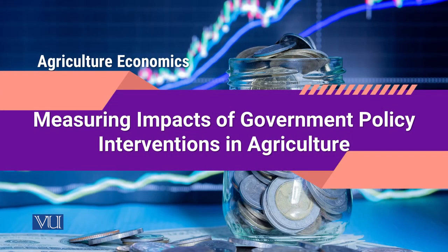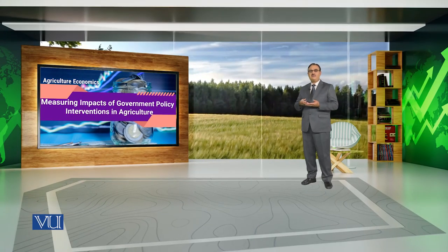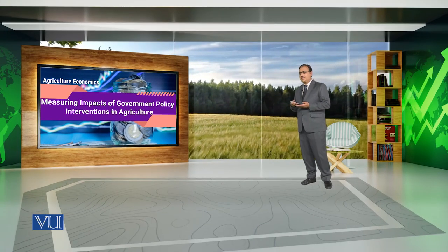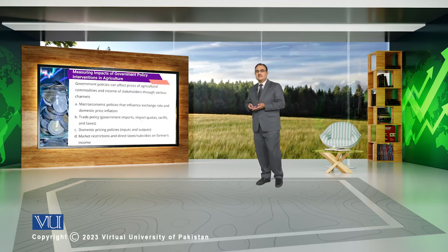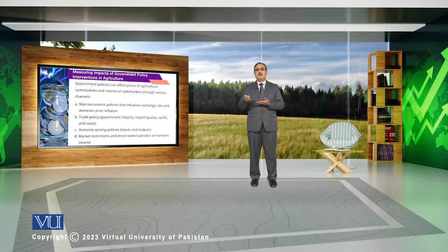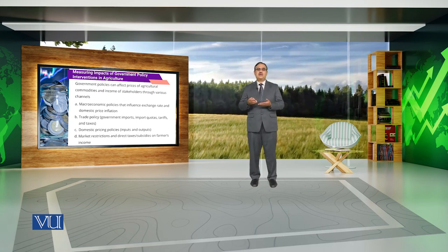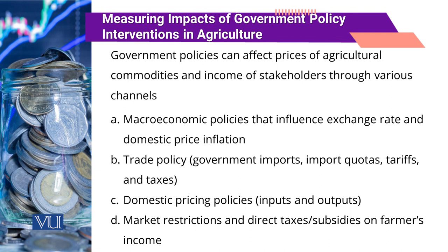Measuring impacts of government policy interventions in agriculture. Government policies basically affect the prices of agricultural commodities. Whatever the policy is formulated, it has some effect on the prices of agricultural commodities and income of stakeholders through various channels.